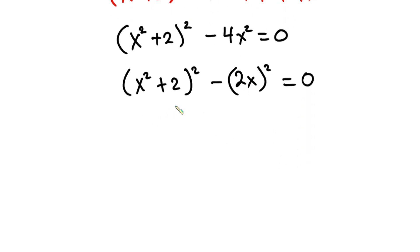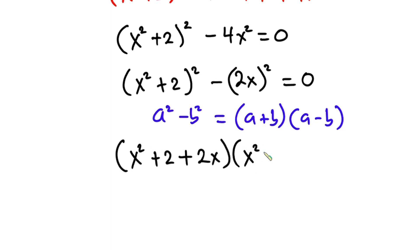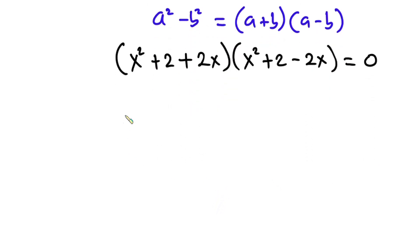Now on the left-hand side the expression is of the form a squared minus b squared, which factors as (a + b)(a - b). So we can write it as (x squared plus 2 plus 2x)(x squared plus 2 minus 2x) equals 0. From this we can form two equations: the first equation is x squared plus 2x plus 2 equals 0.